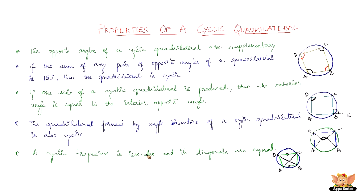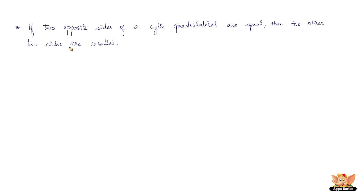The sixth property says that if two opposite sides of a cyclic quadrilateral are equal, then the other two sides are parallel to each other. This is essentially a reversal of the previous property about the cyclic trapezium. Here in the figure, AD and CB are equal. Given this condition, the other pair of sides — that is AB and DC — are parallel to each other.